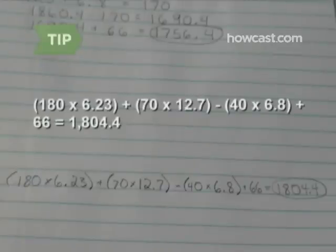A 180-pound man who is 70 inches tall and 40 years old would have a basal metabolic rate of 1,804.4.